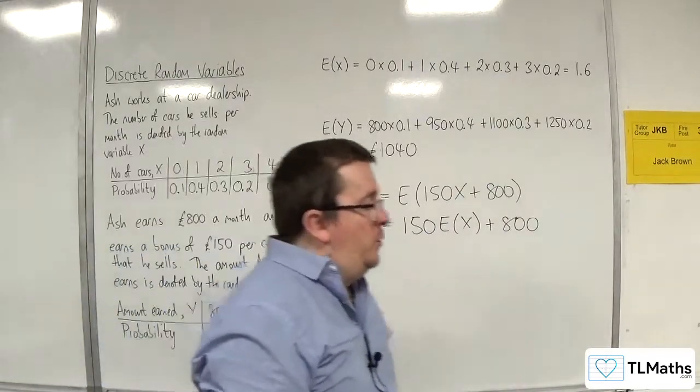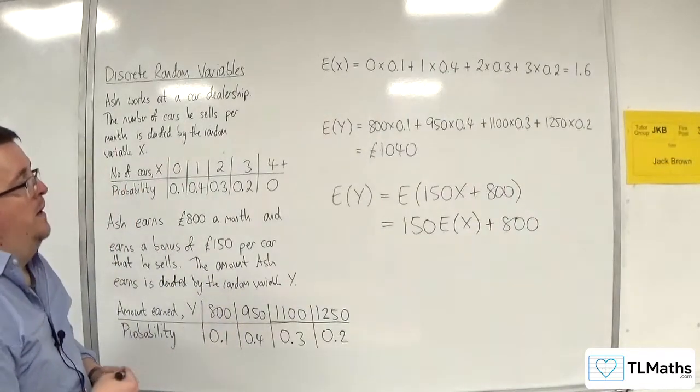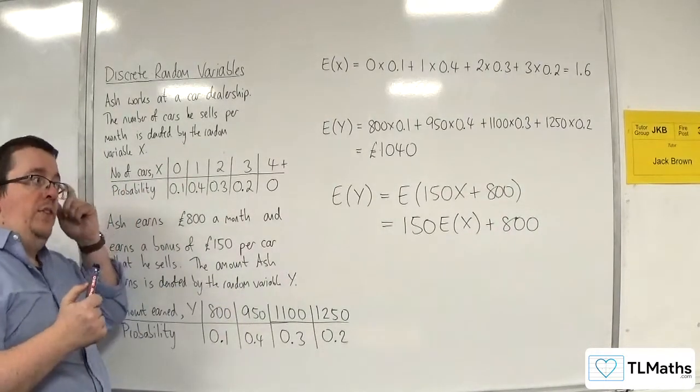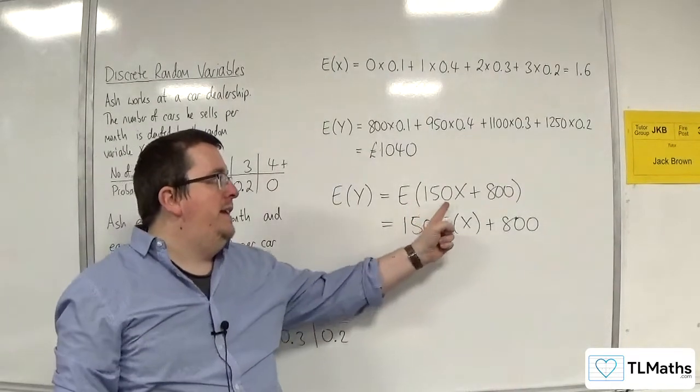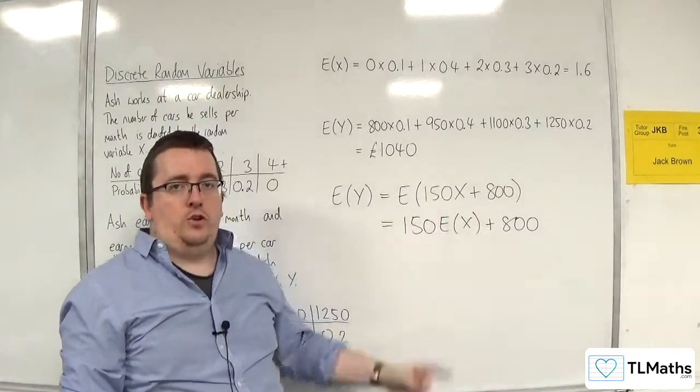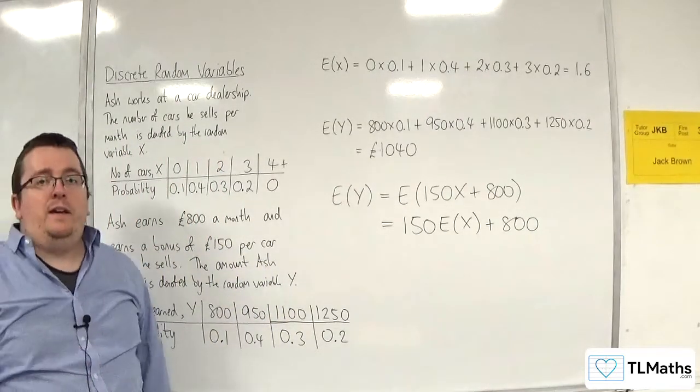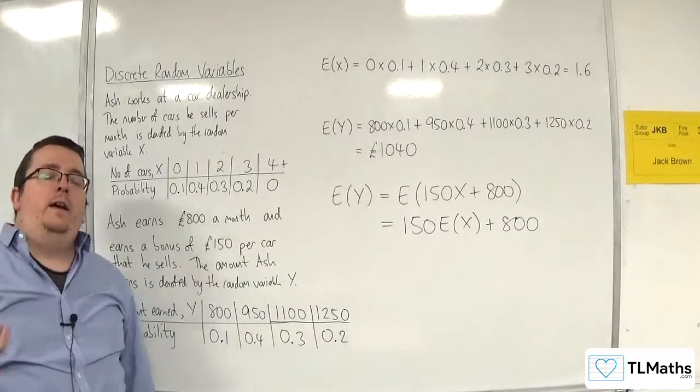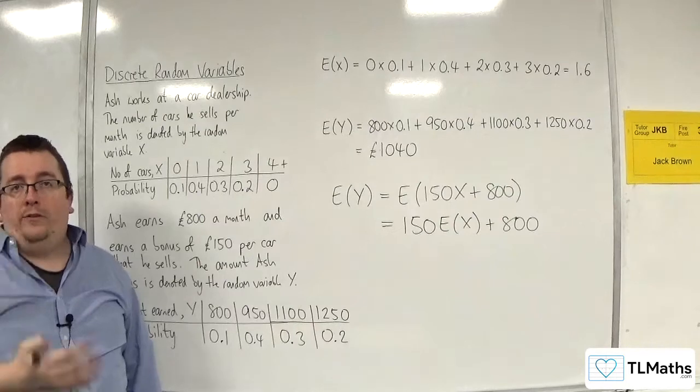Now, what we're going to do is we're going to formalize this result in the next video. But what you're seeing is that actually we can work out a linear coding, essentially, of the distribution in much the same way as you do a linear coding when you're looking at how the mean changes for a set of data.